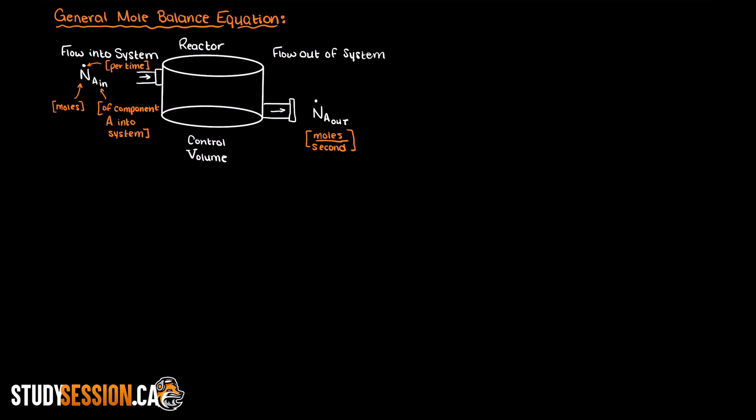We then can perform a general balance equation on this reactor. We can say that the accumulation of component A or any component that we wish to study is equal to the flow rate of moles coming into our reactor minus the flow rate of moles of A leaving our reactor plus any moles of A that were generated within the reactor minus any moles of A that were consumed within the reactor.